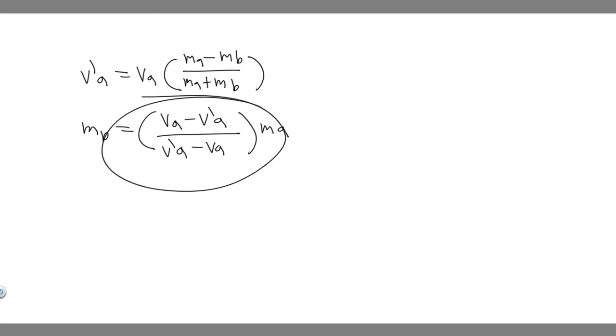What we want to do is go ahead and plug the numbers in. We know that va prime is going to be 0.35 of va, because they tell us it's going to rebound with 0.35 its original speed. So v prime a is just going to be 0.35 va. We're just going to replace v prime a with that, and that's going to allow us to solve.